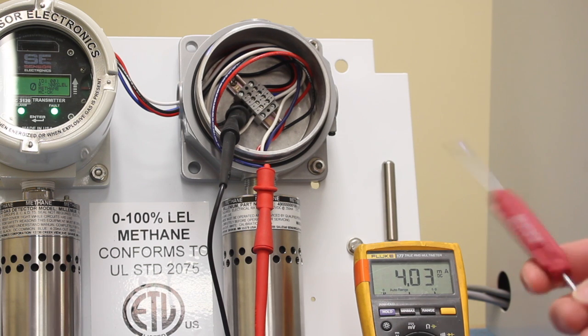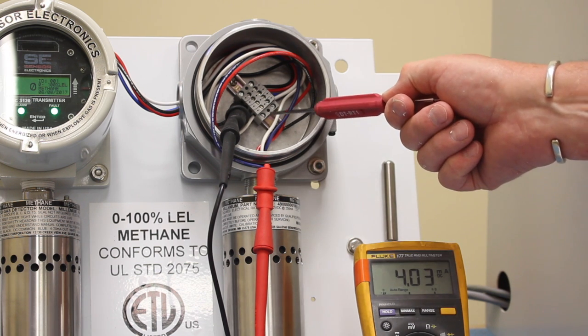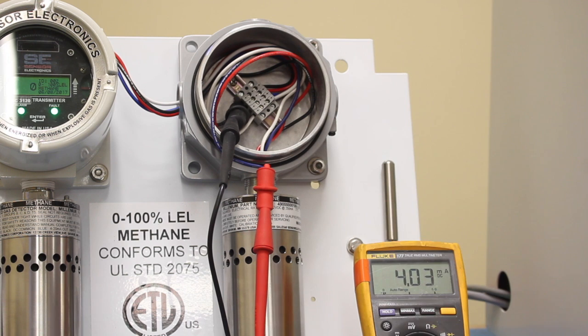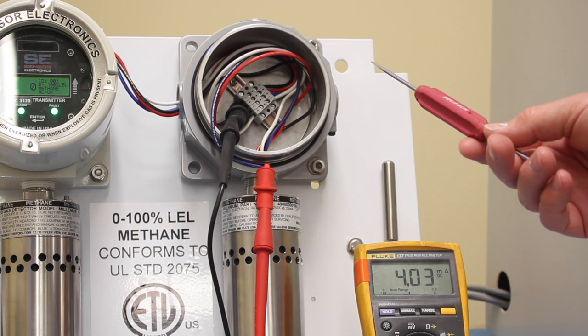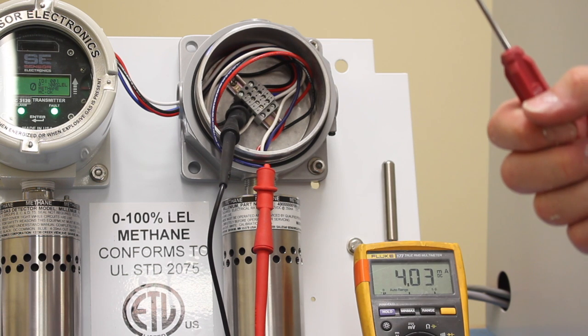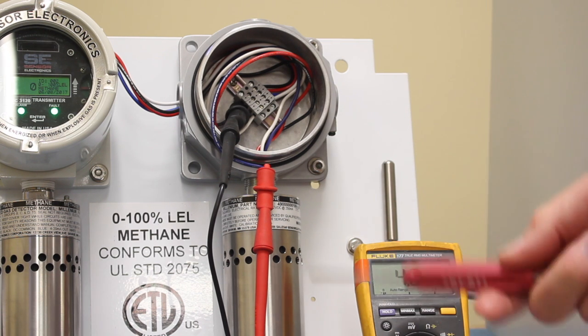Now to zero the sensor, all you need to do is take the calibration wire and connect it to DC common for 10 seconds, and then once that 10 seconds is up, just remove the connection and then the sensor will actually zero.